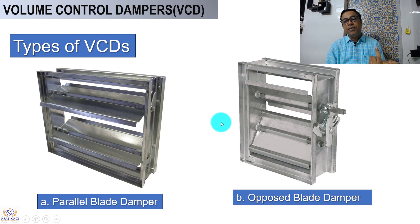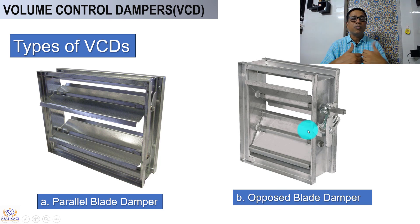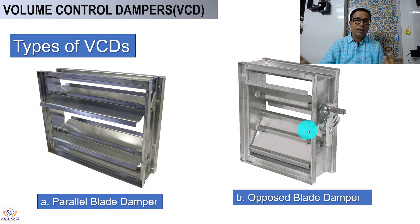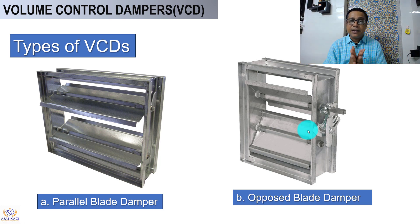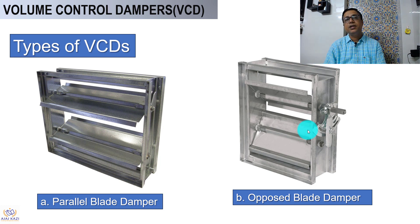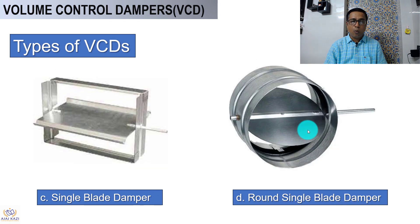The second type is called an opposed blade damper. You can see the blades open in opposite directions. When you close the damper, they close in opposite directions, and vice versa for opening.